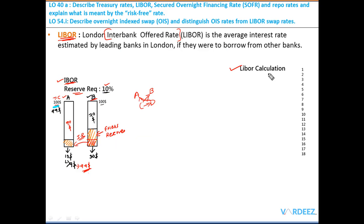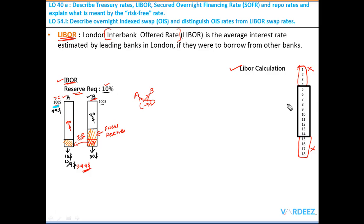For the LIBOR calculation, 18 banks each make estimates of the rate at which they can borrow from other banks. The top four highest estimates and the bottom four lowest estimates are discarded. The middle range of estimates is averaged, and that average is how we derive the LIBOR for a particular period of time.